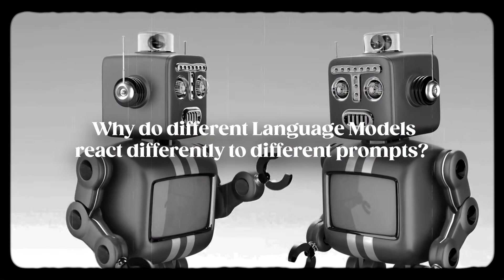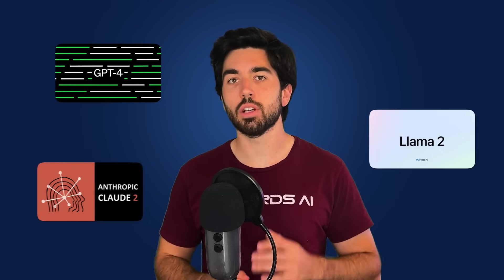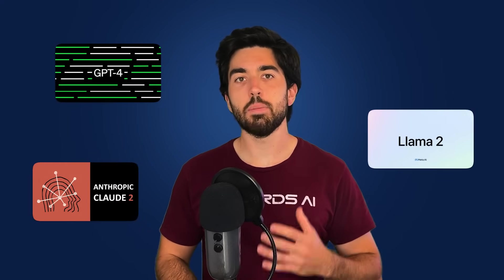But first, why do different models like GPT-4, Llama 2, or Claude react differently depending on the prompt sent?